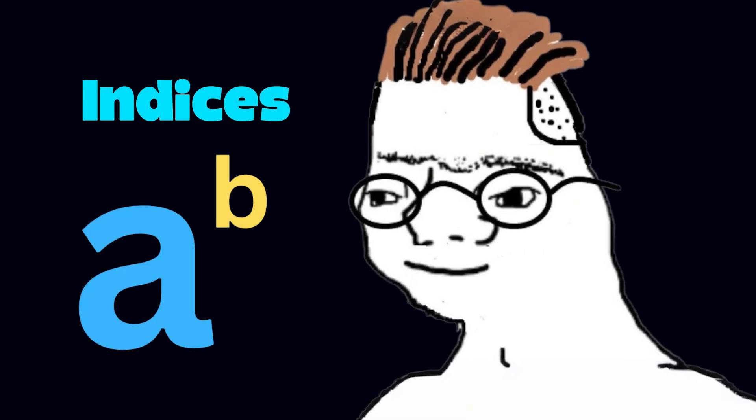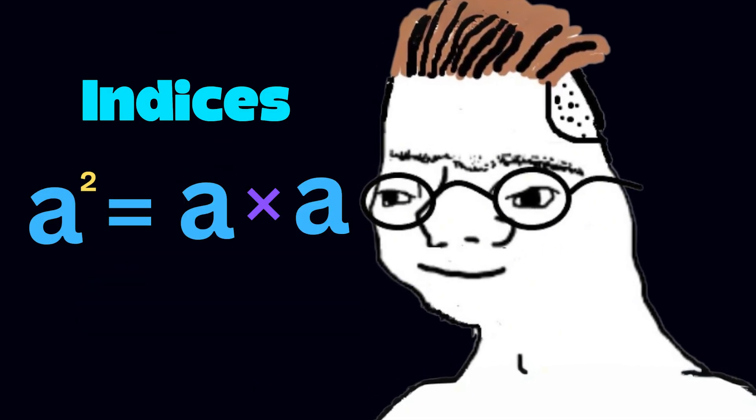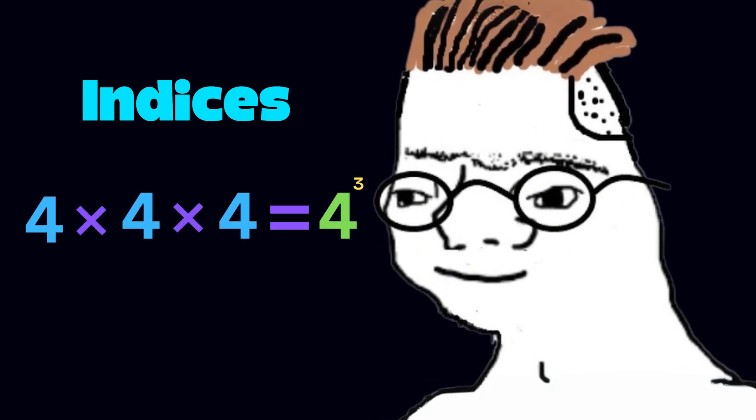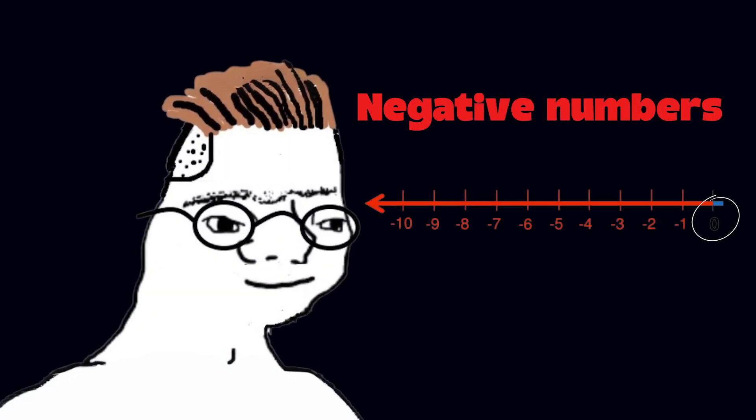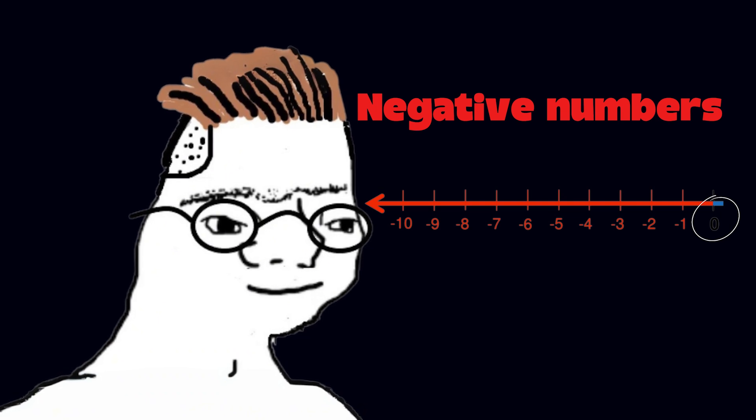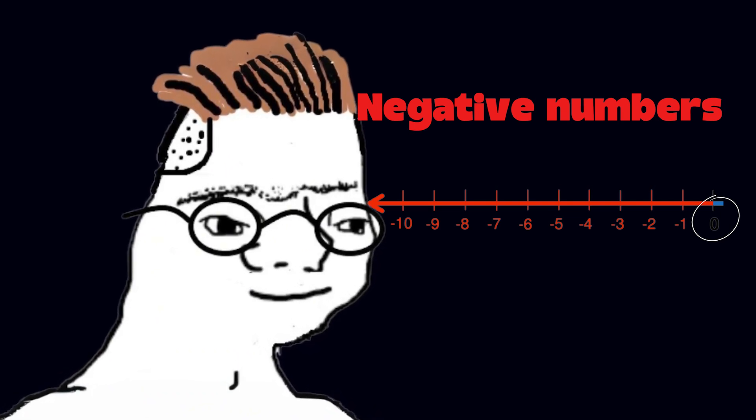So, indices basically are a simple symbol made to represent the number multiplying by itself. So, 4 times 4 is 4 to the power of 2 and 4 times 4 times 4 is 4 to the power of 3. Negative numbers are numbers that are smaller than 0. This is more of an abstract concept which is hard to visualize in a real-world setting but maybe you can see it as taking two steps back from some point you call 0.